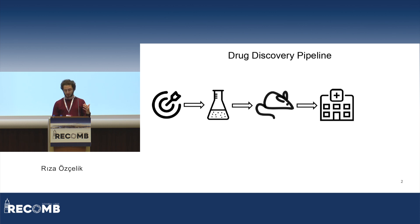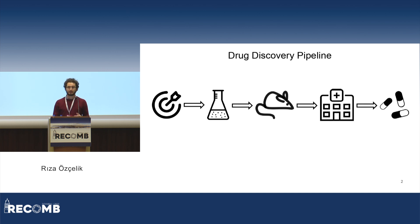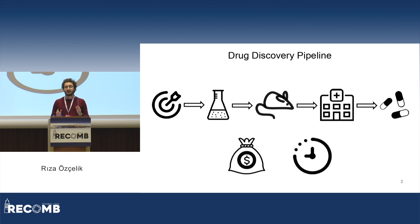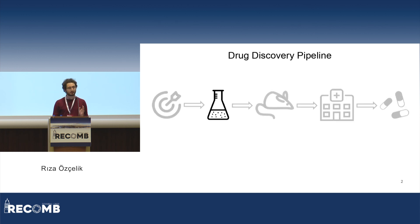When you have some promising leads, you go to animal trials, then clinical trials, and hopefully in the end you get your drug. Unfortunately, this is a very costly process that would cost billions of dollars, and a very time-consuming process that will take more than 10 years. Since we need our drugs and we need them fast, we need to accelerate this pipeline. There is a lot we can do at every stage, but in this work I will be talking about how we can accelerate the step where we are trying to find promising lead molecules.